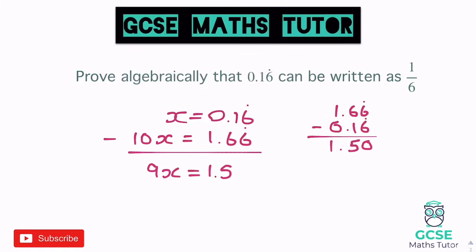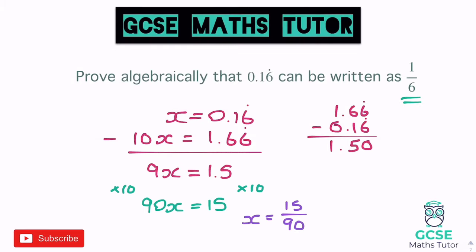We've got a decimal on the right-hand side again, so we times both sides by 10, giving 90x equals 15. We can turn that into a fraction — divide both sides by 90, and we must leave it in terms of algebra: x equals 15 over 90. The question says show it equals 1/6, so we divide by 15: 15 divided by 15 is 1, and 90 divided by 15 is 6. There's our final answer — 1/6. We've shown that using algebra and shown how we've simplified our fraction.